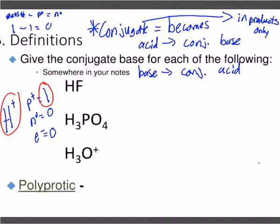They're really losing a proton because a hydrogen ion is very unique — it's just a proton, just the nucleus. There are no electrons. So our conjugate base to HF is going to be F⁻, because it loses one proton, and it loses one proton at a time. H₃PO₄ — phosphoric acid — becomes H₂PO₄⁻ as the conjugate base. The hydronium ion, H₃O⁺, becomes H₂O.